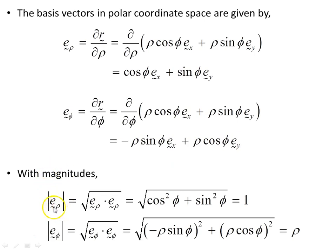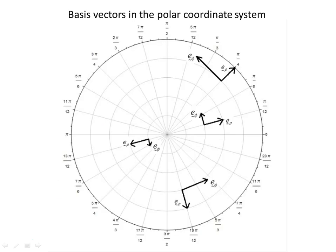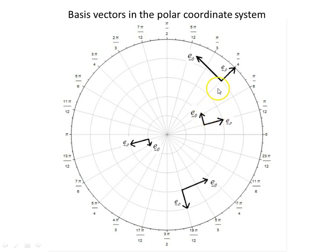These basis vectors have magnitudes. The modulus of e_rho is 1, so its length is 1. In the phi direction, e_phi dot e_phi gives a magnitude of rho. Looking at the basis vectors in the polar coordinate system: e_rho has unit magnitude everywhere, but e_phi changes because it depends on rho. As rho increases — as you move further out from the origin — e_phi increases in length since it is a function of rho.